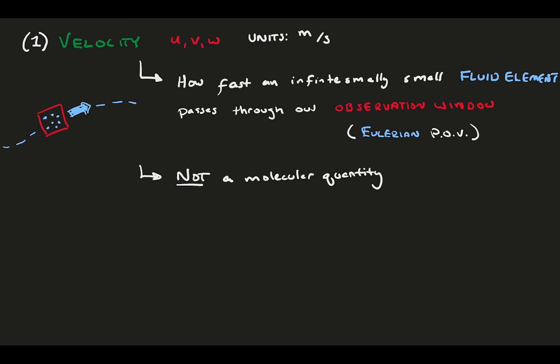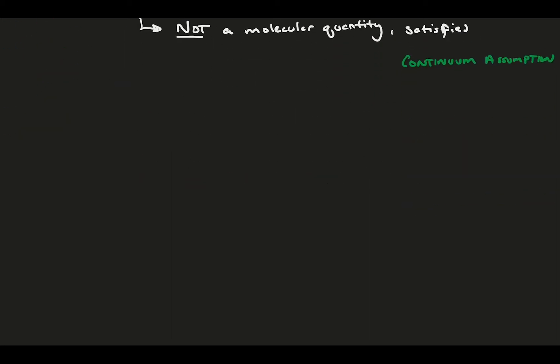Individual molecules each have their own erratic speeds, which we'll cover later. Next up, we have pressure. Typically represented by capital P, has the units of force per area.